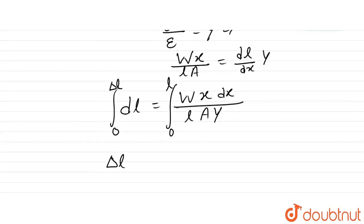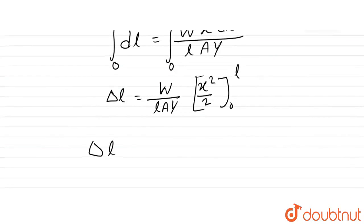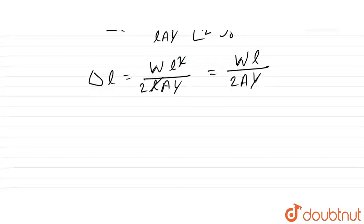So delta l, the change in length, is W/(lAY) times the integral of x×dx from 0 to l. This gives us delta l equals W×l²/(2lAY), which simplifies to Wl/(2AY).